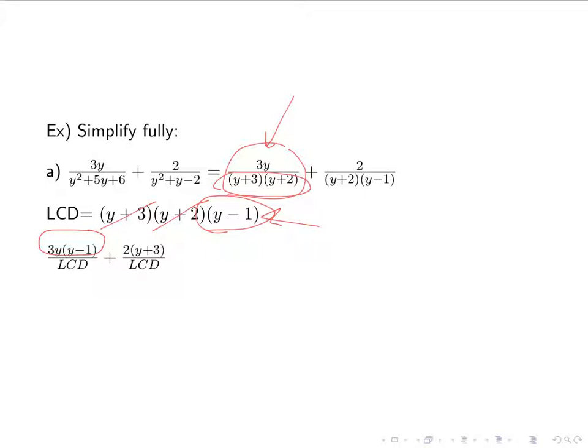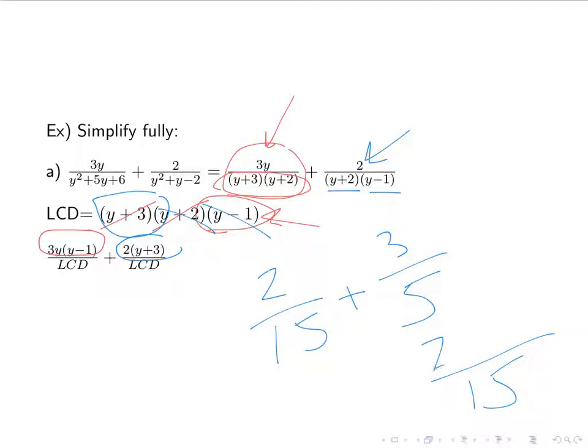For our second one, we have the y plus 2, we have the y minus 1. So we need the y plus 3. So we end up with 2, our original numerator, times the y plus 3. Just like you would do with normal fractions. If I was going to add, say, 2 over 15 plus 3 over 5, our LCD here would be 15. 2, I already have 5. I need to multiply by 3 to get 15. So I'd multiply 3 by the other 3. This is the exact same thing you did back in third or fourth grade when you started adding fractions. Just now, instead of numbers, we've got binomials.